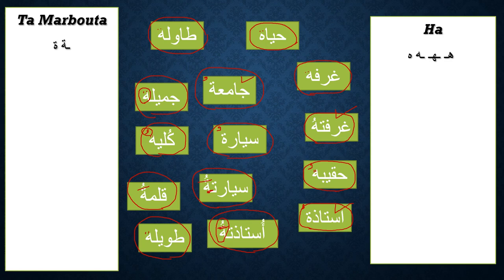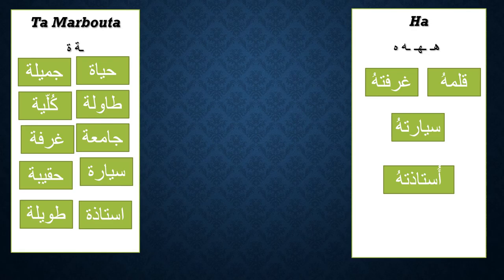I hope after this you don't make mistakes between ta marbuta and ha. Go back and listen to this video again, especially the five rules — these are very important. Keep practicing. These rules are so important: try to add dhamma and pronounce — if you hear yourself saying ta, then it's ta marbuta. If you don't hear ta, then it's ha.